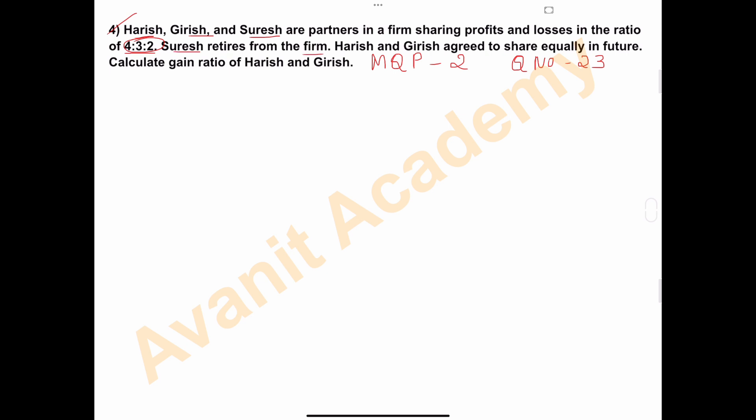Harish and Girish agreed to share equally in future. So after the retirement of Suresh, Harish and Girish decided to share profits and losses equally in future. Calculate gain ratio of Harish and Girish—six marks problem.